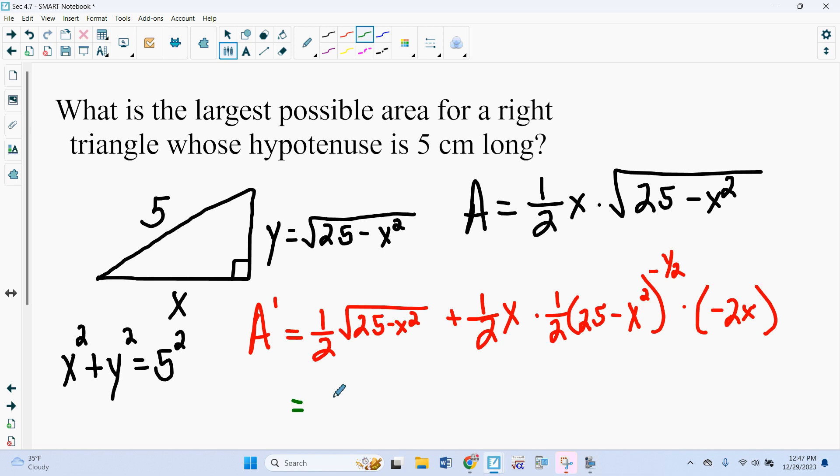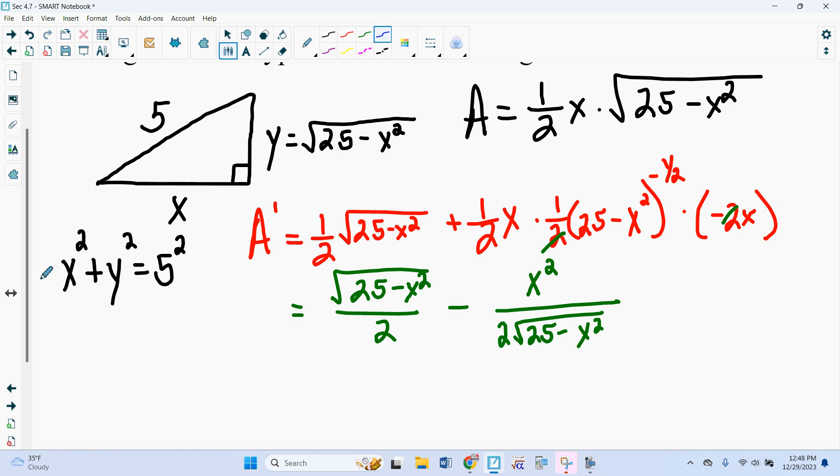If we simplify this, we get square root of 25 minus x squared over 2. Minus if we get over here, this 2 is going to cancel with one of these. So we end up getting x squared on the top. And on the bottom, we're going to get 2 square root of 25 minus x squared. So you can see this problem is very similar to what we looked at at the beginning today. So to get our common denominator, I'm going to multiply by 25 minus x squared over here.